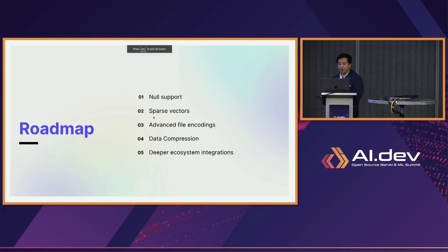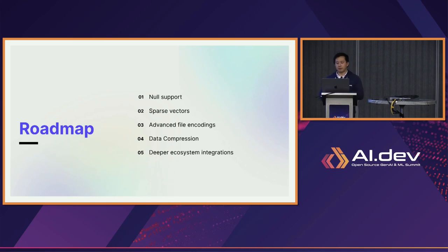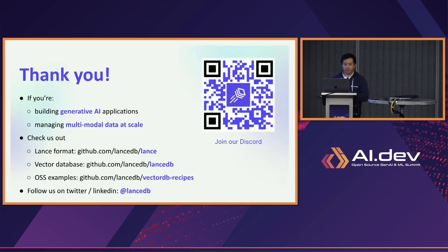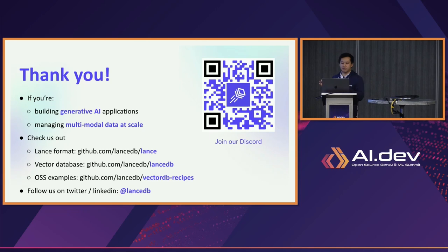I've had a lot of fun working on this, and there are lots of very exciting things to come: null support, sparse vectors — useful for biomedical and healthcare — full-text search, advanced file encodings, data compression, and more native-level ecosystem integrations to tools like Spark, Ray, Polars, and beyond. If you're building generative AI applications or managing multimodal data at scale, please check us out. The Lance format is at LanceDB/Lance on GitHub, the open-source vector database is LanceDB, and VectorDB-recipes has more than a dozen worked-out examples in both Python and TypeScript.